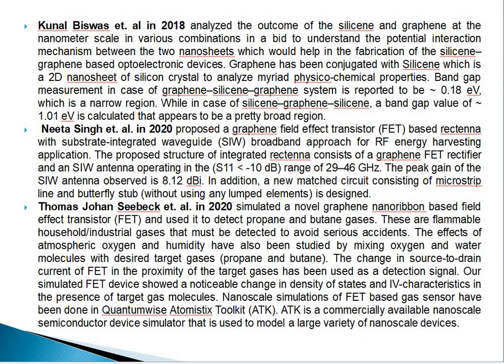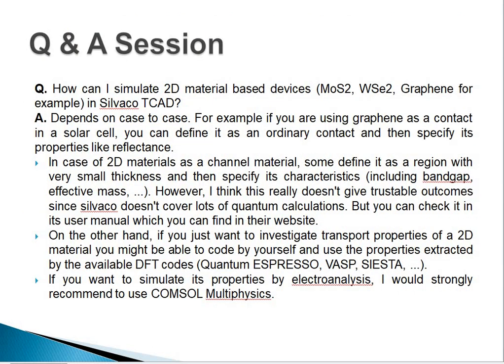I know it is boring, but you must know this if you start to work on graphene field effect transistors or 2D materials. Most students ask me whether we can use graphene in the Silvaco Atlas tool and how to simulate 2D material-based devices in Silvaco Atlas. The answer depends on the case. For example, if you are using graphene as a contact in a solar cell, you can define it as an ordinary contact and then specify its properties like reflectance.